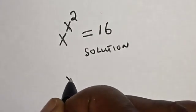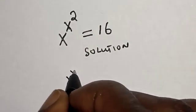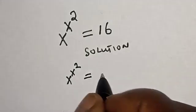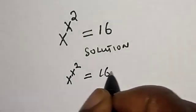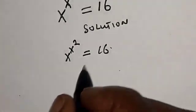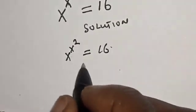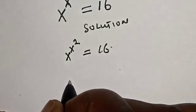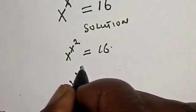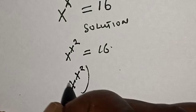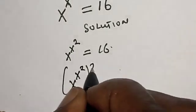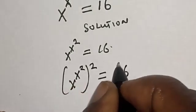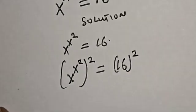We have s raised to the power s squared is equal to 16. Let's multiply the power of both sides by 2. That is, s raised to the power s squared, raised to the power 2, is equal to 16 raised to the power 2.